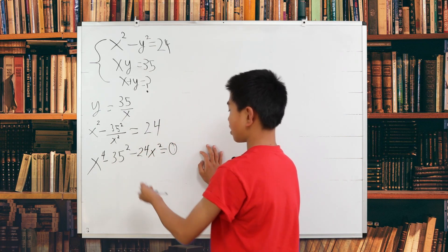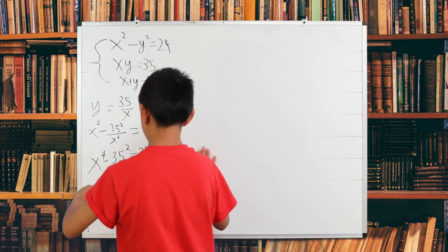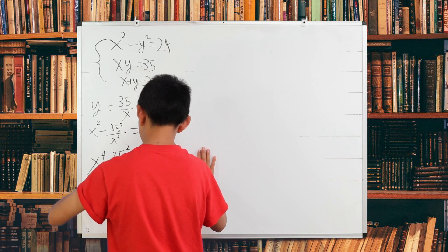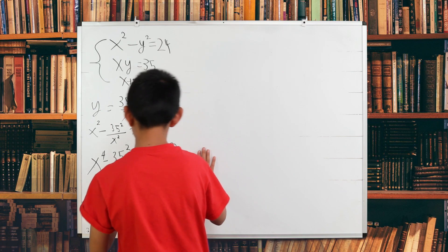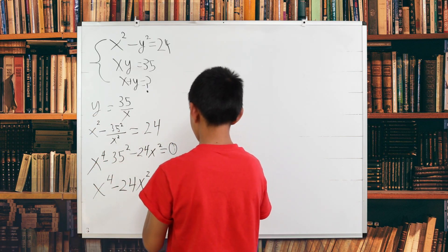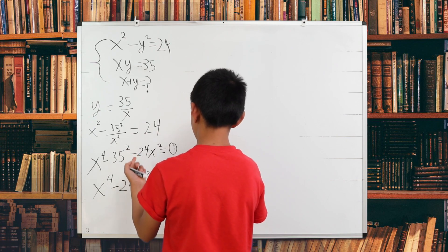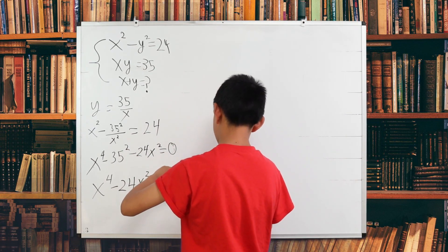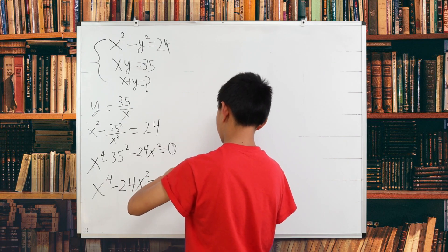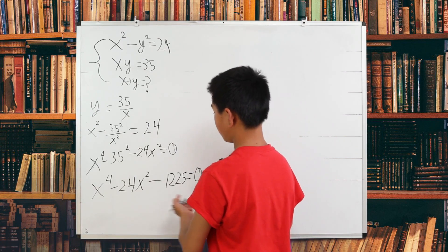Now we can move these numbers around a bit. So this is just x to the fourth power minus 24 x squared minus, well, 35 squared is just 1,225.